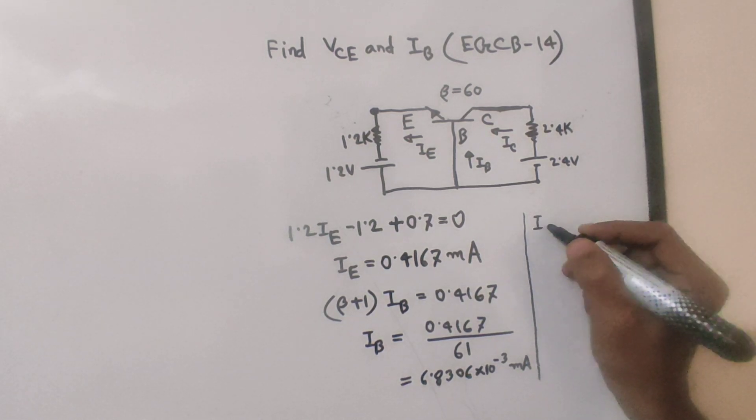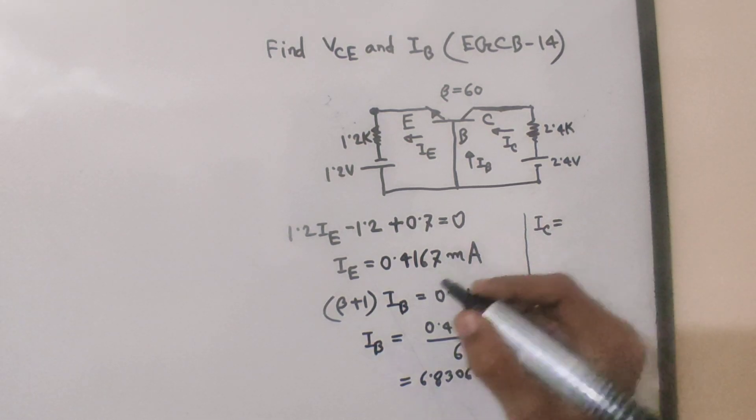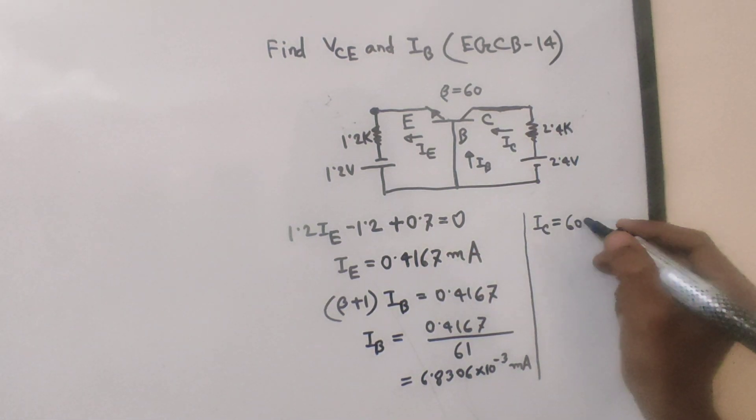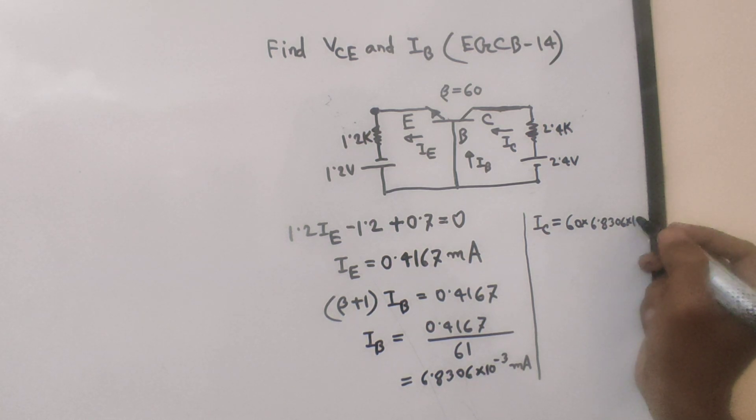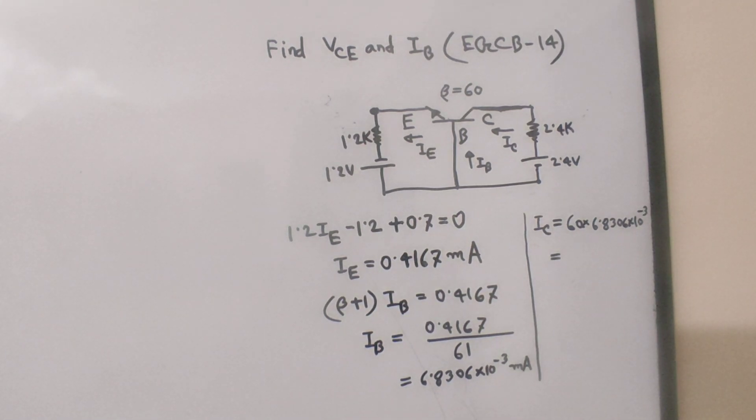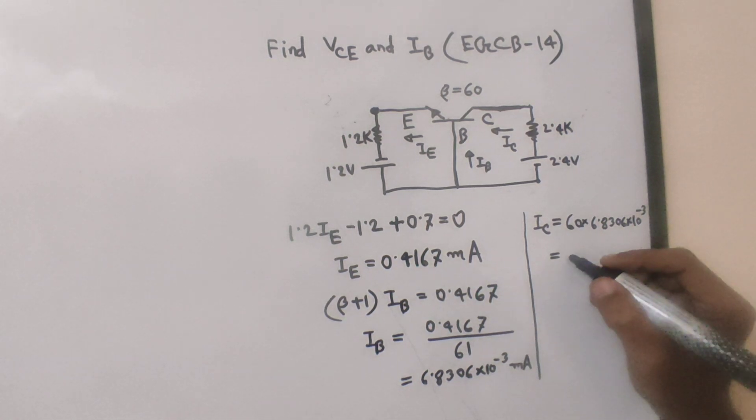IC is equal to beta times IV. Beta is 60, so IC equals 60 into 6.8306 into 10 inverse 3 milliampere.